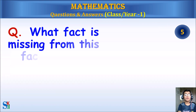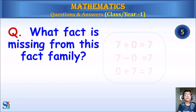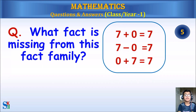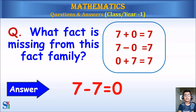What fact is missing from this fact family? Answer: 7 minus 7 equals 0.